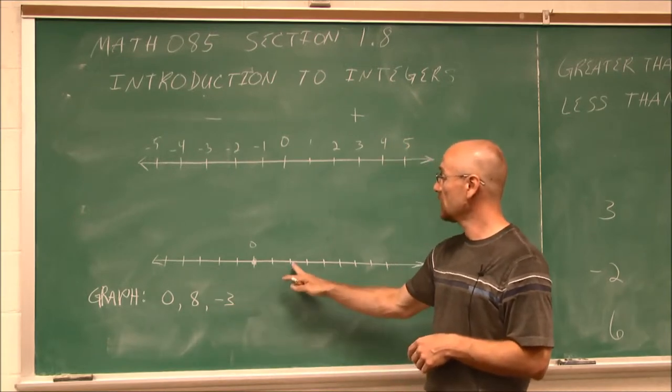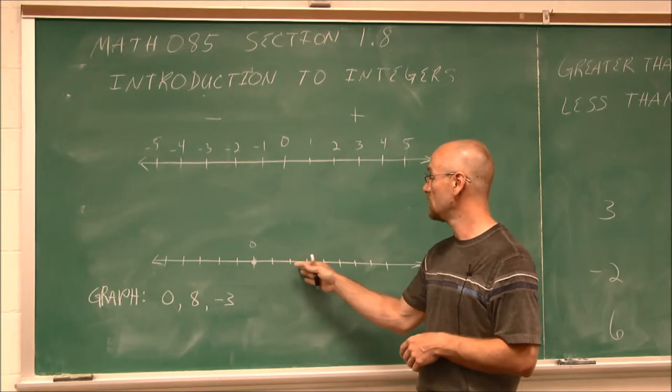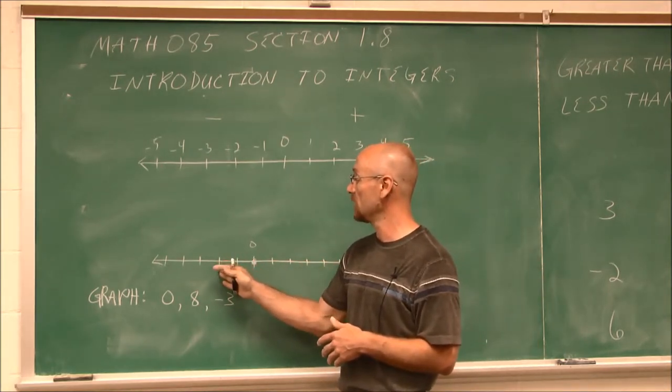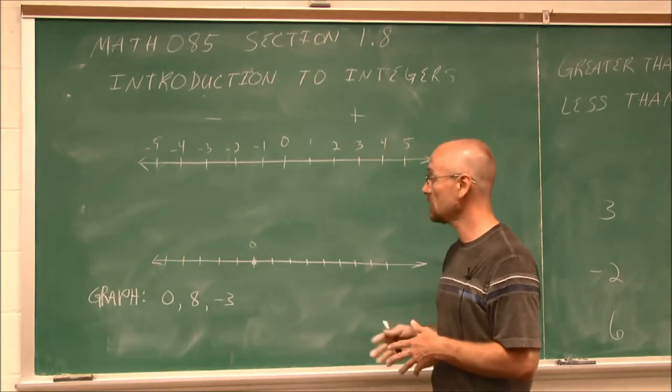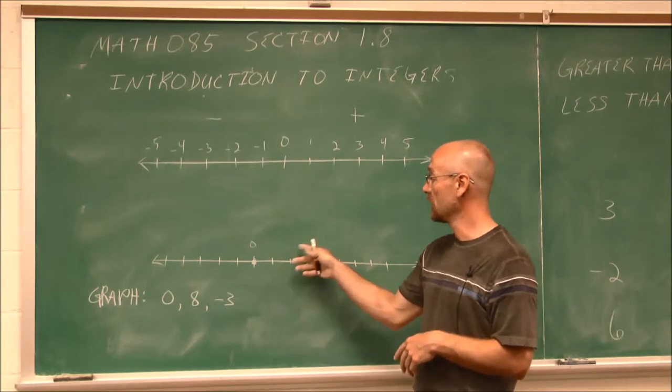To do 8, essentially we look at each tick mark. Each tick mark represents an integer. 1, 2, 3, 4, and so on. If we're to the left of 0, it's negative 1, negative 2, negative 3, negative 4, and so on. Each tick mark represents one distance from the next.